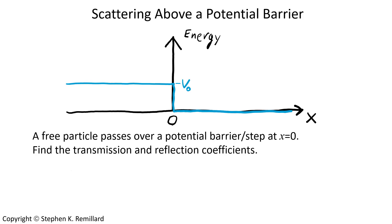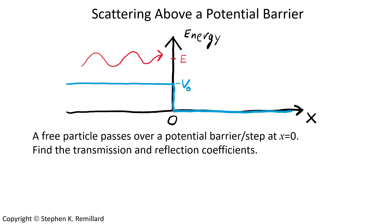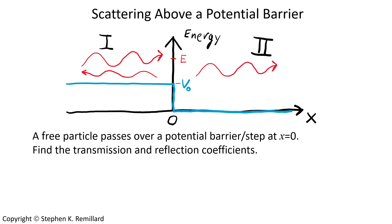A sketch of the potential function shows a sudden change at x equals zero. It has value V-zero in negative space and a value zero in positive space. A wave is incident at energy E. When that wave arrives at the interface, some of it has to reflect because of the sudden change in potential energy. It is like a light wave arriving at a dielectric interface where there is a sudden change in impedance, so some reflects back and some proceeds through. The negative region is region one and the positive region is region two.